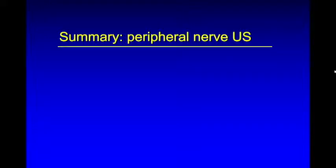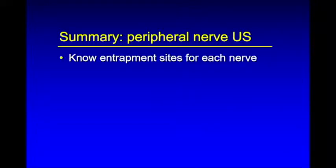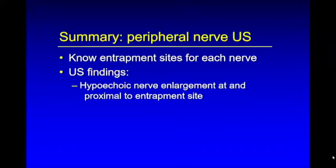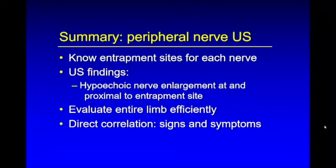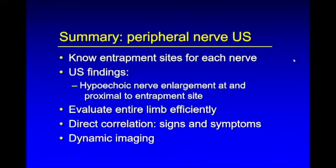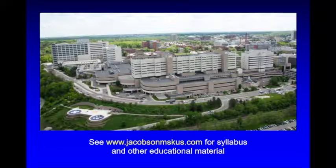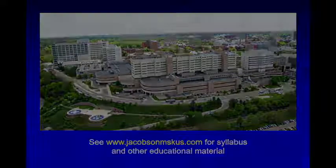To summarize this lecture on peripheral nerve ultrasound focusing on entrapment neuropathies: I went through each nerve in the extremities highlighting the key anatomic locations prone to entrapment. The ultrasound finding everywhere is hypoechoic enlargement at and proximal to the entrapment site, with the caveat that the tibial nerve often does not show this. What's nice with ultrasound is we can evaluate the entire limb very efficiently, much quicker than MRI, with higher resolution, correlate directly with signs and symptoms, and benefit from dynamic imaging — which was important for the ulnar nerve at the elbow and Morton neuromas. Thank you very much.